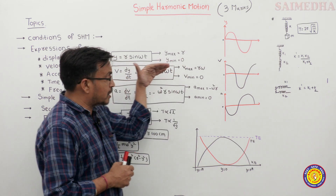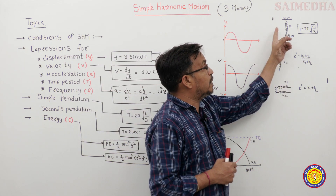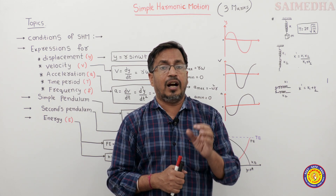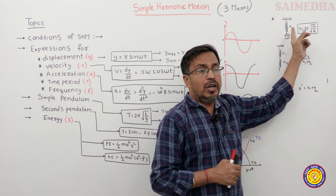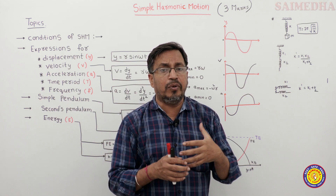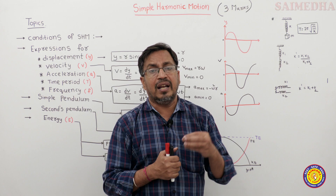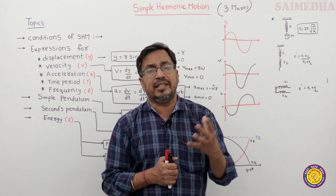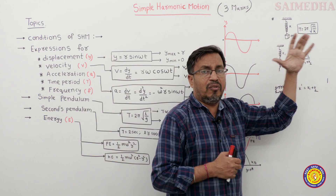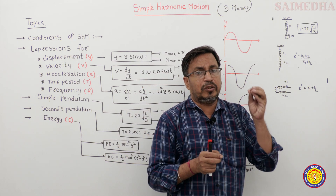This is the spring pendulum. Here, k is the spring constant and m is the mass of the object. The time period T = 2π√(m/k). If you have an advanced level, you have to connect two springs in series or in parallel and find the effective spring constant. So students, if you connect two springs, what is the time period and what is the frequency? In this chapter, we have three marks.